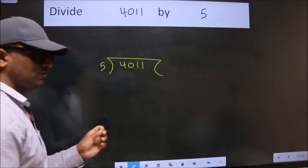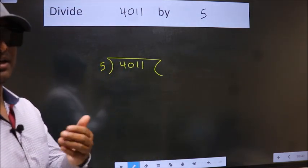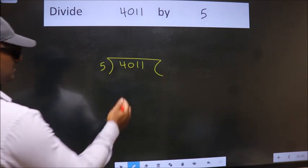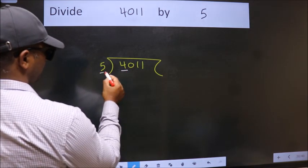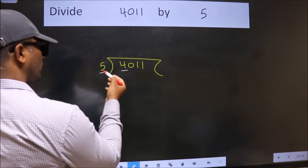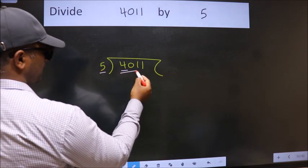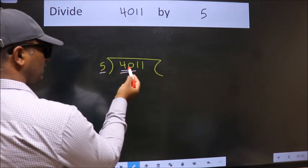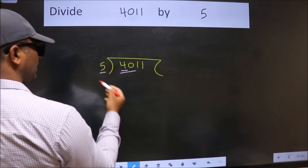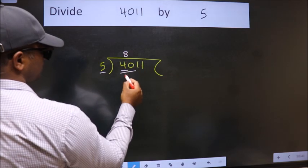This is your step 1. Next, here we have 4, here 5. 4 is smaller than 5, so we should take 2 numbers: 40. When do we get 40 in the 5 table? 5 times 8 is 40.